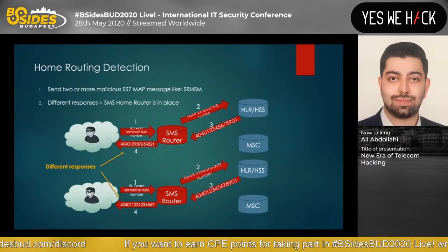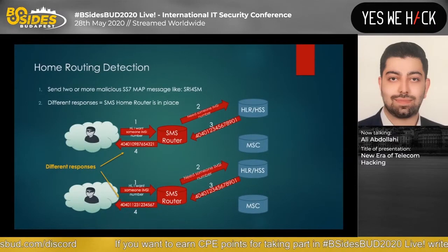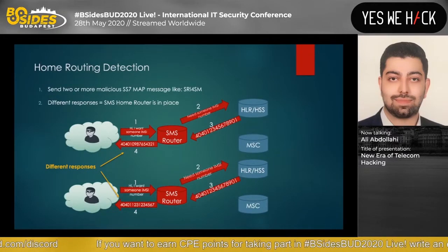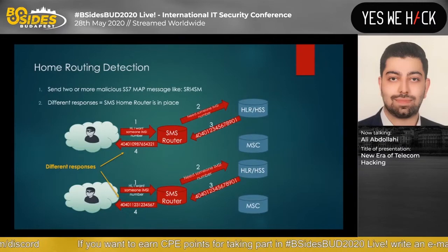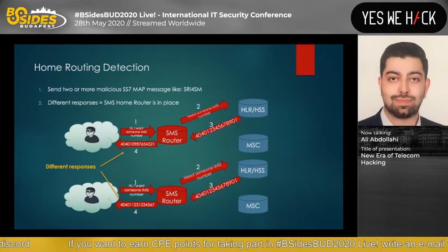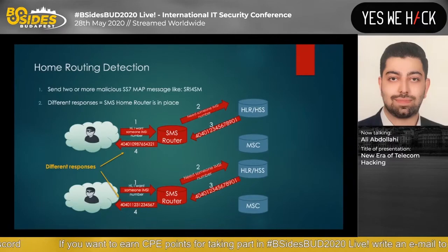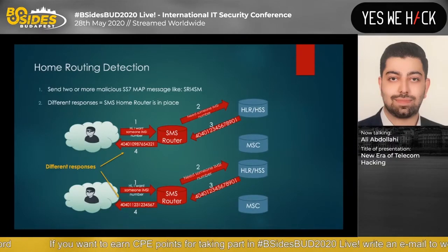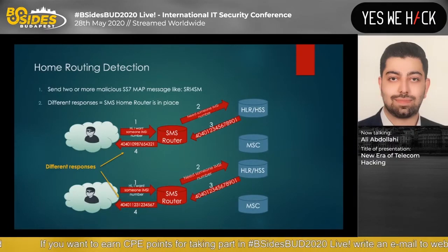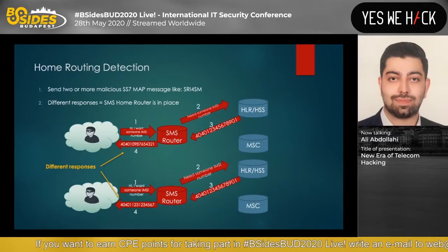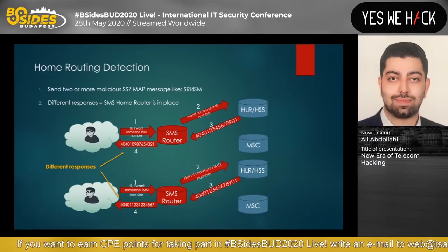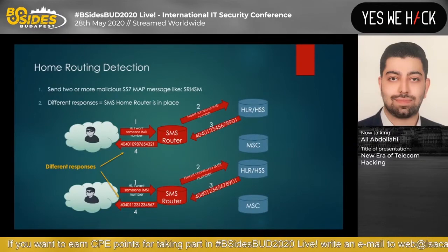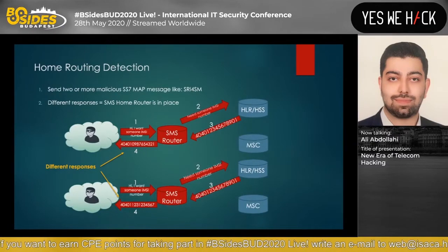So how can we detect if Home Routing is in place? By sending more malicious SS7 messages like Send Routing Info for SM (SRI-for-SM). It's easy: if we receive different responses, it means that SMS Home Routing bypass is successful in our targeted operator.